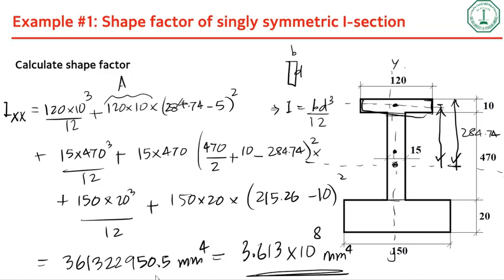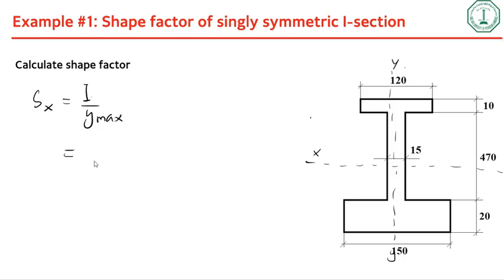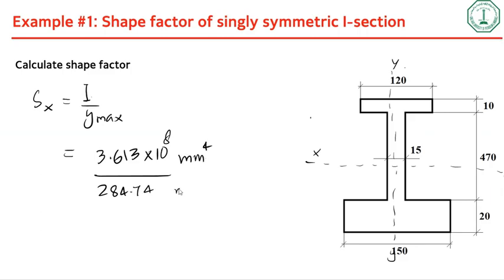To calculate the elastic section modulus Sx, use Sx equals I divided by y_max. Substituting I equal to 3.613 times 10 to the 8 mm⁴ and y_max equal to 284.74 mm — noting that mm⁴ divided by mm gives mm³ — you obtain the value of Sx.